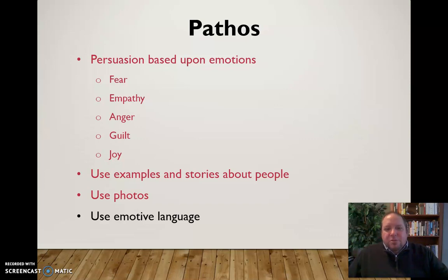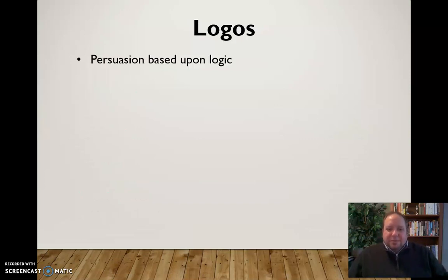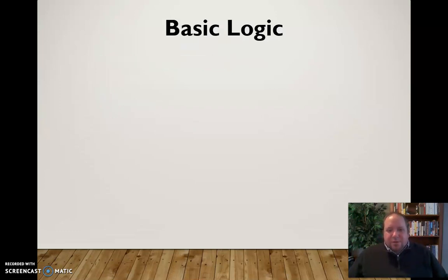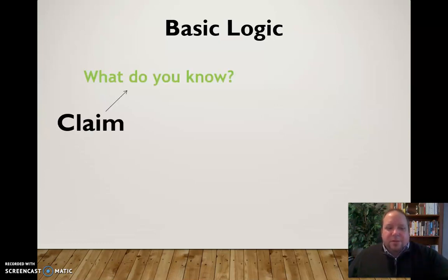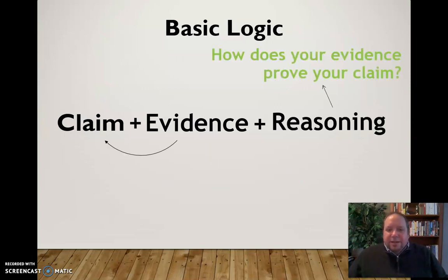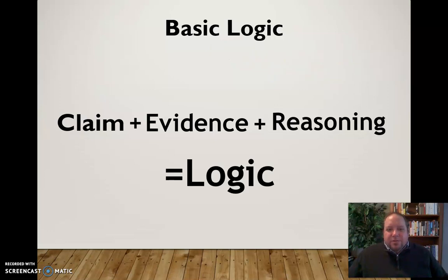We also want to use logical appeals — logos — which is persuasion based on logic. That includes things like facts, statistics, and sound reasoning. The basics of logic work like this: you have a claim — what is it you're trying to convince the audience to accept? Then you have evidence — how do you know this to be true? You present your evidence alongside your claim, and then you add reasoning, which explains how that evidence supports the claim and how it all works together. Between those three things, you get logic.